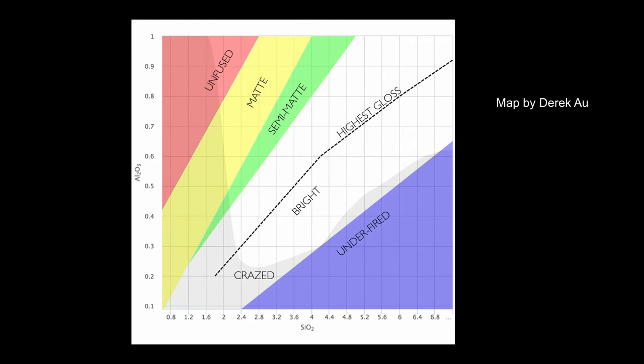To solve this problem I decided to create a large portion of the Stull's map using the materials and process of crystalline glazes. Stull's map is based on the concepts of the UMF, wherein glaze chemistry is represented by the molecular proportion of oxides to fluxes in the glazes. The interesting thing about crystalline glazes is that they are composed of sodium and zinc, which can be substituted for potassium and calcium, which the map is based on.